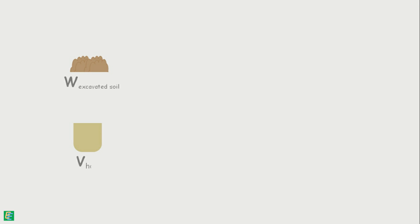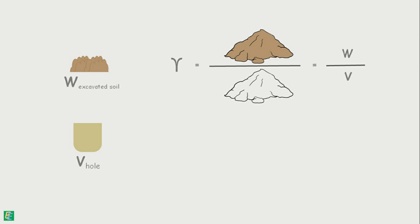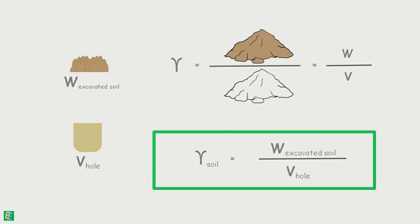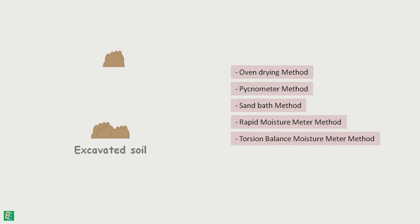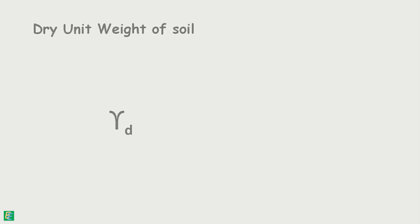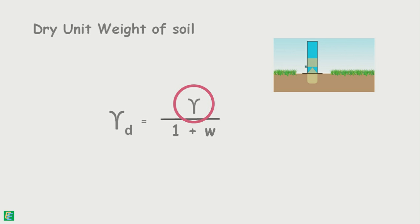Now we know the weight of the soil excavated from the hole and the volume of that hole, so by applying the bulk unit weight formula we can calculate the bulk unit weight of the excavated soil. If we take a small sample and determine its water content using any other water content determination method, we can calculate the dry unit weight of the soil using the formula: dry unit weight equals gamma divided by (1 + w), where gamma is the bulk unit weight we calculated and w is the water content.